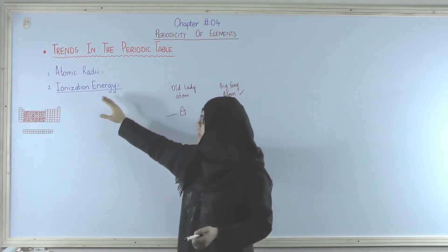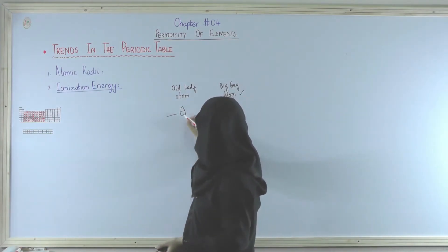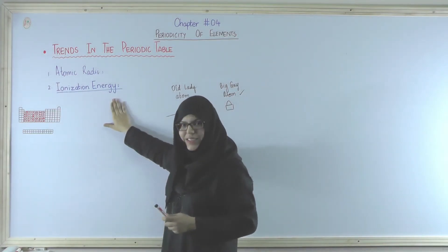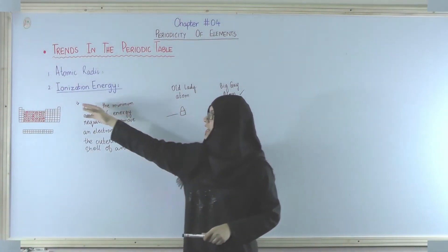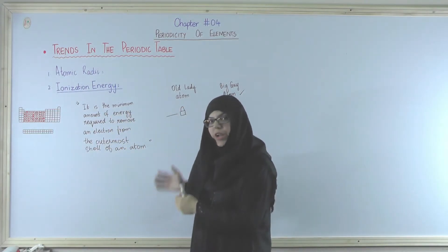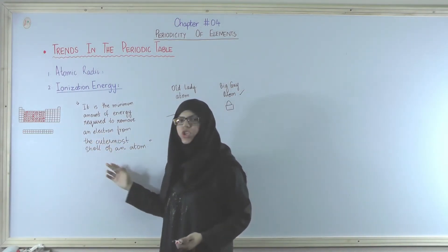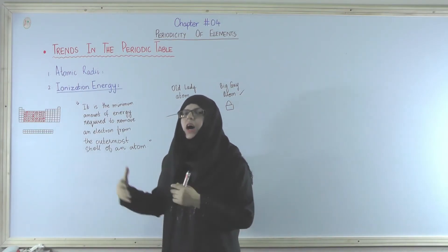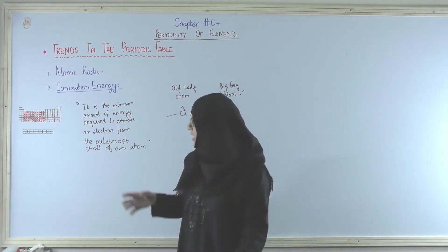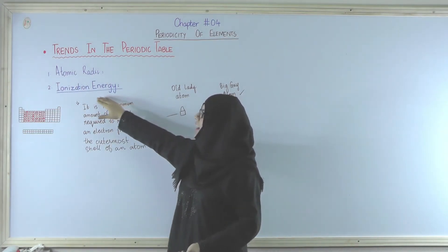So the ionization energy is similar to that of the thief. Wo kya hota hai? Wo energy lagai jaati hai to snatch the electron from the outermost shell. When we are talking about ionization energy we can say that it is the minimum amount of energy required to remove or in this case to steal, to snatch an electron from the outermost shell of an atom. Kisi bhi atom ke outermost shell mein se unka ek electron nikalne ke liye, remove karne ke liye, steel karne ke liye jitni energy chahiye kisi ek atom ko, wo energy kehlati hai ionization energy.